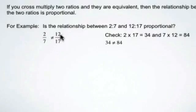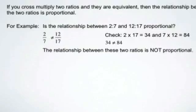And of course you could write them as a fraction first before you did the cross multiplying to make it a little bit easier to see that yes we take 2 and multiply it by 17 and we take the 12 and we multiply it by the 7. So this is not a proportional relationship.